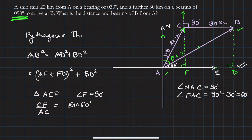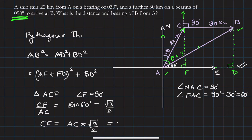Sin 60° = √3/2 from our trigonometric table, so CF = AC × √3/2. Since AC = 22 kilometers, CF = 22 × √3/2 = 11√3 kilometers.